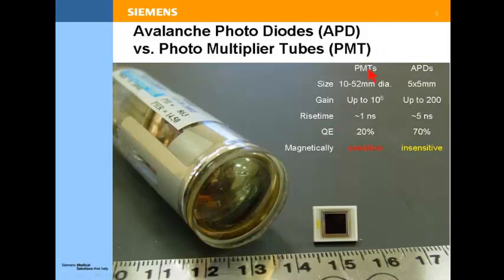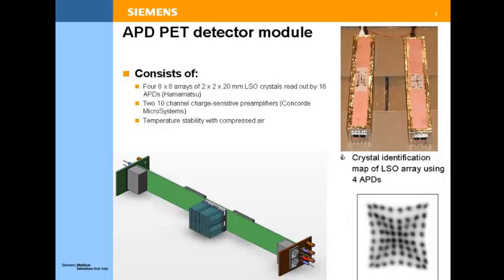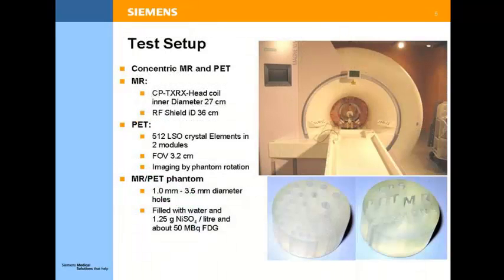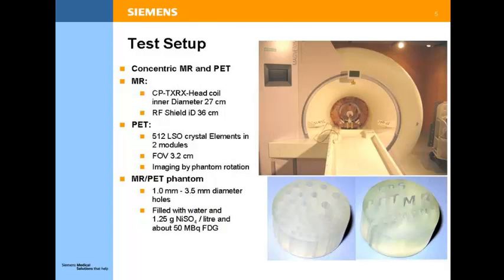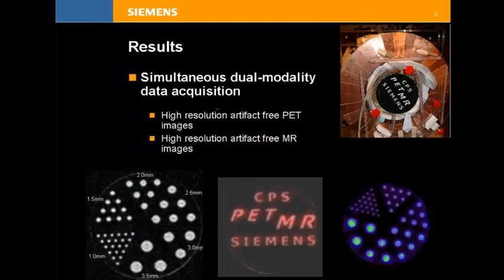Comparing photomultipliers and APDs: APDs are much smaller, have faster gain, a slightly slower rise time, and are not sensitive to MR. However, with APD technology you cannot perform time-of-flight PET imaging. The detector arrays consist of four-by-eight arrays of LSO crystals with avalanche photodetectors that are very stable to temperature. This was the first prototype developed as a head insert with the fibers outside for computing, and the resulting images showed very good PET quality with resolution down to one millimeter in phantom settings, as well as very good MR quality.